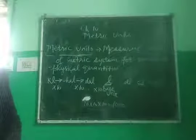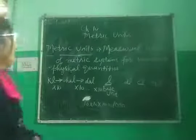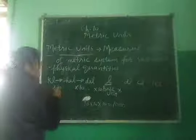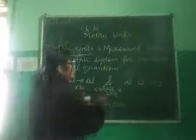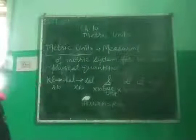If liters are converted into deciliters, again multiply by 10. The conversion factor shown here is 1,000.